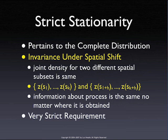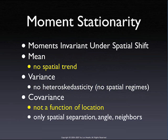In concept, stationarity means that the joint distribution of any data points remains the same no matter where you are in the data set. You can think of a joint distribution of, say, any ten data points within a window — that distribution should not change if you move the window over. What you can verify is whether the characteristics of that distribution remain the same. Typically, what we refer to is not strict stationarity but moment stationarity — whether the moments are invariant under spatial shift.